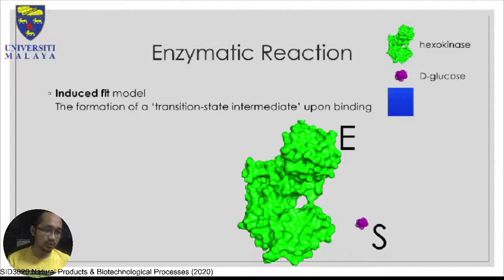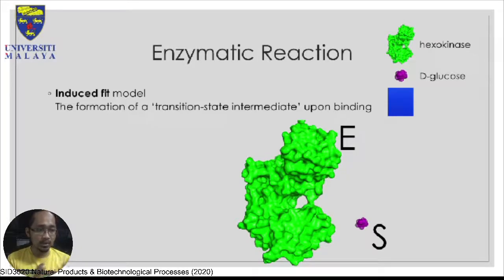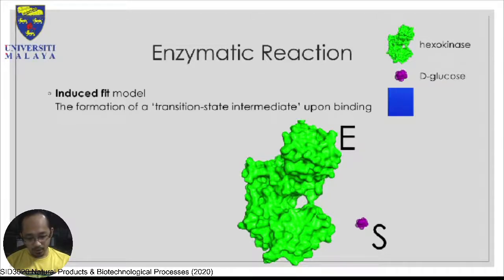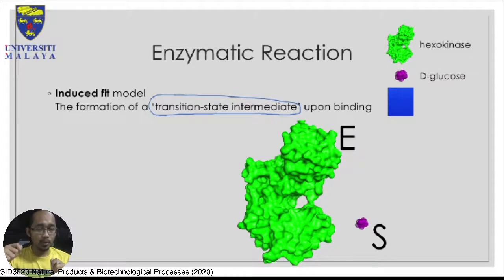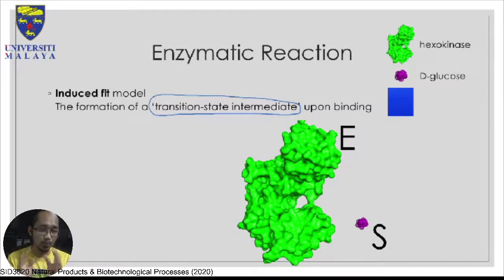The second model is the Induced Fit model, where enzymes are not static but dynamic. The critical aspect of the Induced Fit model is that there is a transition state intermediate upon binding. For the Lock and Key model, Emil Fischer did not originally propose an intermediary — the basic principle was simply enzyme plus substrate yields product. However, Daniel Koshland proposed a transition state in which the enzyme is more flexible and dynamic.